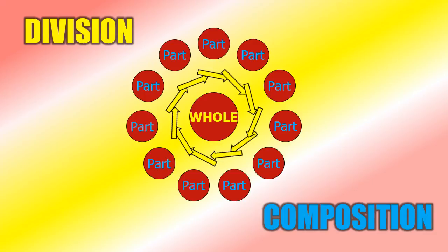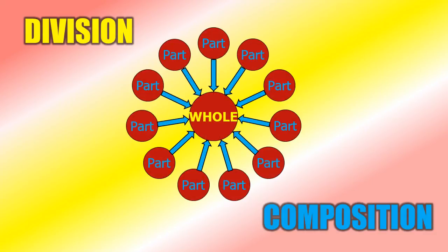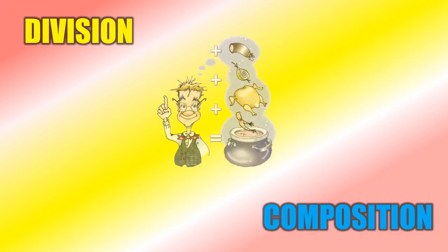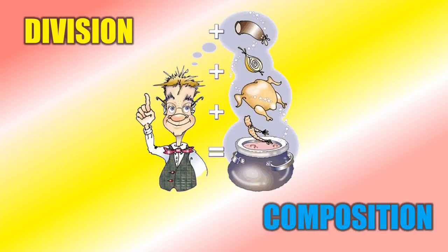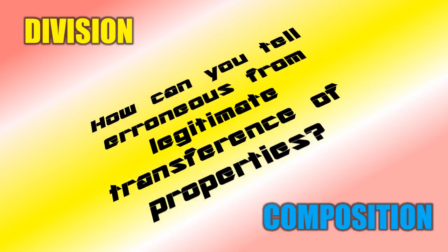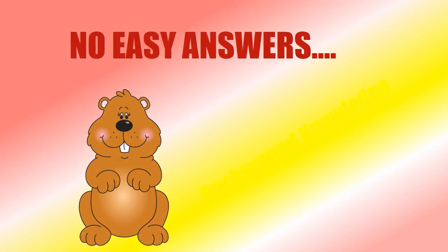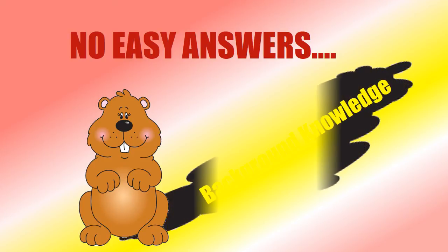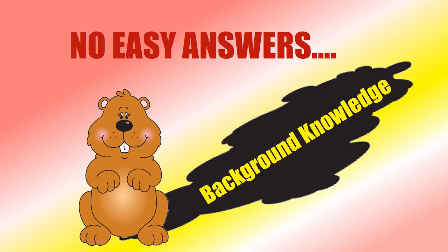In fallacies of division, you divide the property of the whole down to the parts. In a fallacy of composition, you illegitimately go from features of the parts to features of the whole — like the Brooklyn Bridge example, or if a person says each element in the recipe is delicious, therefore the dish as a whole will be delicious. If you're looking at an argument and you see a division or combination of properties from parts to whole or vice versa, you're going to have to use your background knowledge to figure out whether it was a legitimate tactic.